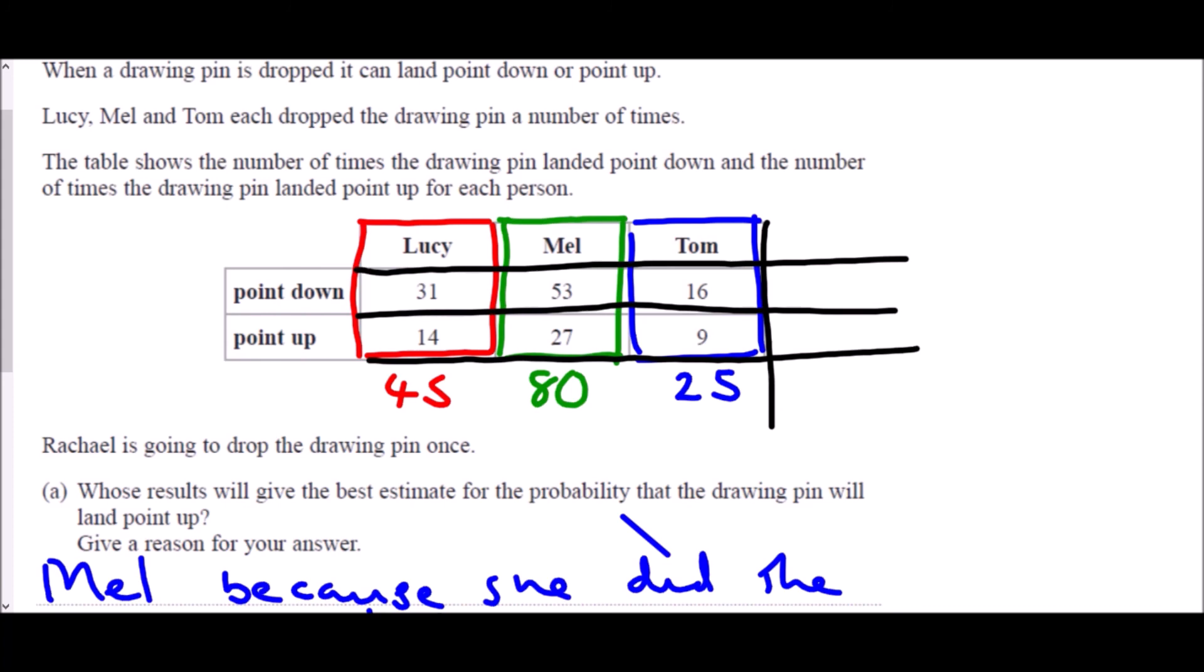And so what we want to know is all together, how many tests did we do, and how many of each did we get? And so for point down, we had 31 plus 53, so that is 84, and plus 16, that is 100. So we got 100 point downs. For point ups, we got 14 plus 27, so that is 41, plus 9 is 50. And in total, that means we did 150 tests.